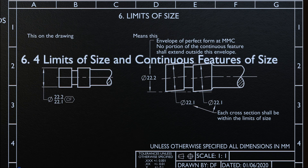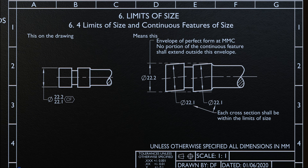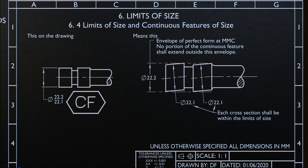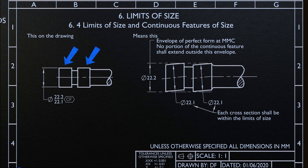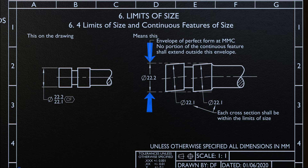Now let's discuss the limits of size and continuous features of size. The note continuous feature, or continuous feature symbol, is used to identify a group of two or more features of size where there is a requirement that they are treated geometrically as a single feature of size. When using the continuous feature symbol, extension lines between the features may be shown or omitted. However, extension lines by themselves do not indicate a continuous feature.